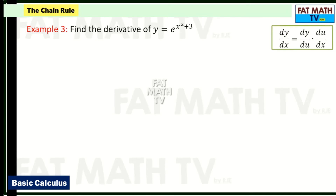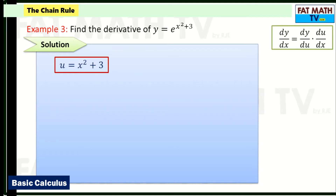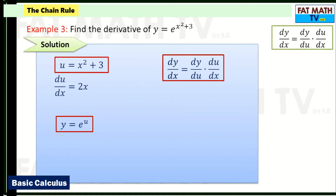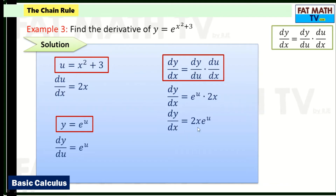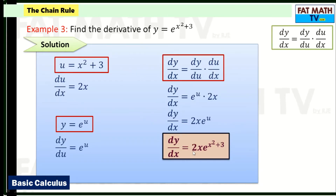Example 3: find the derivative of y = e^(x² + 3). Let u = x² + 3, so y = e^u. The derivative of x² + 3 is 2x (derivative of x² is 2x, derivative of 3 is 0). The derivative of e^u is itself, e^u. So dy/dx = e^u times 2x = 2x·e^u. Substituting back: dy/dx = 2x·e^(x² + 3).